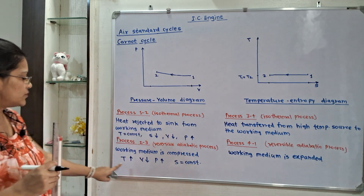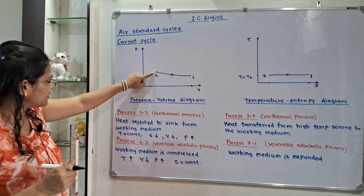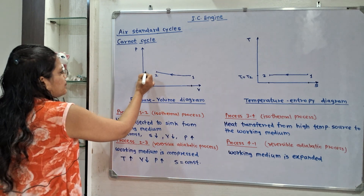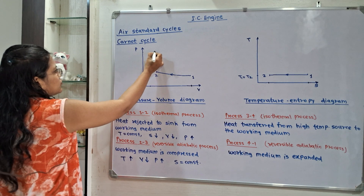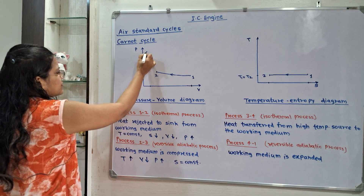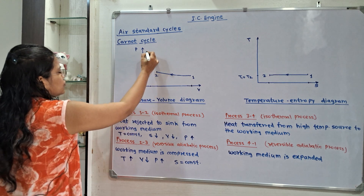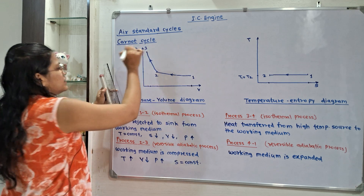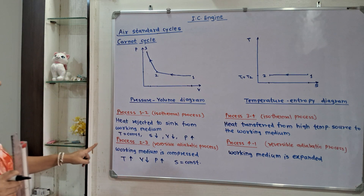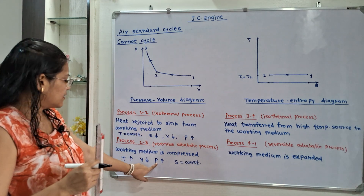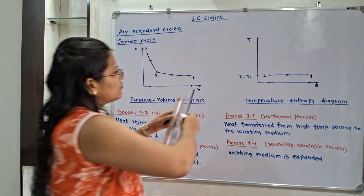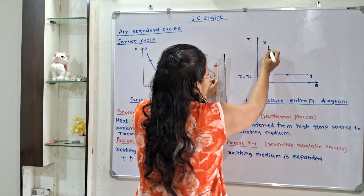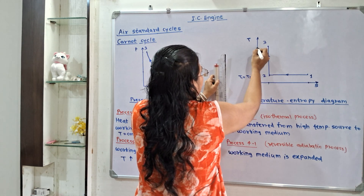We now show process 2 to 3 on both diagrams. On the PV diagram, volume is getting decreased and pressure is getting increased, so point 3 is at a lower volume and higher pressure than point 2. On the TS diagram, entropy remains constant while temperature increases, so we draw point 3 directly above point 2 at a higher temperature T3, with S2 equal to S3.